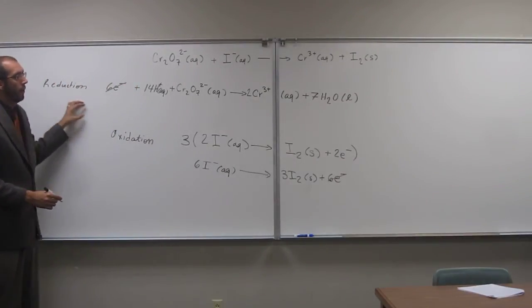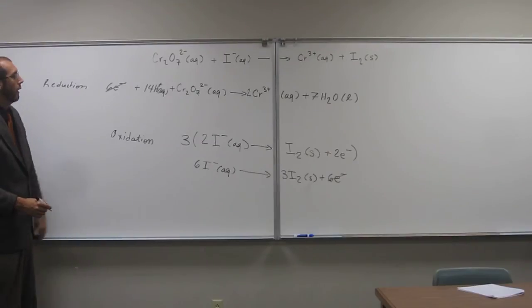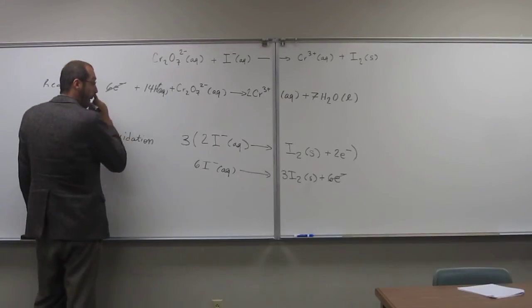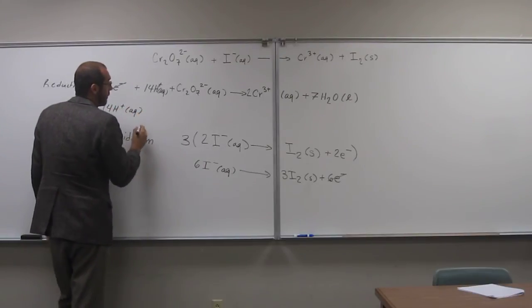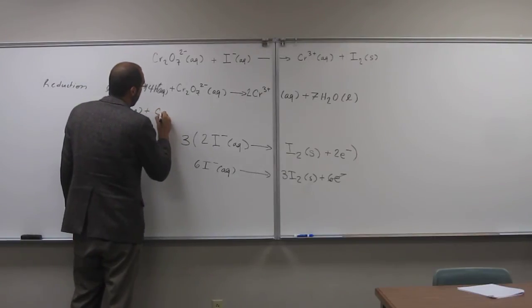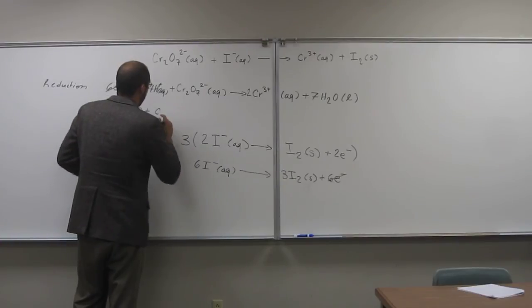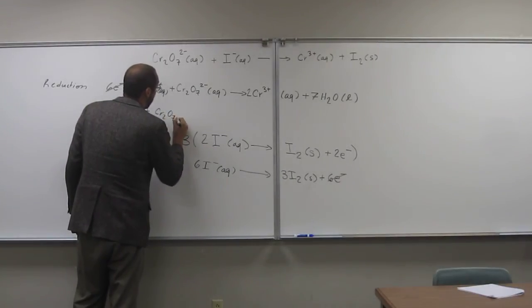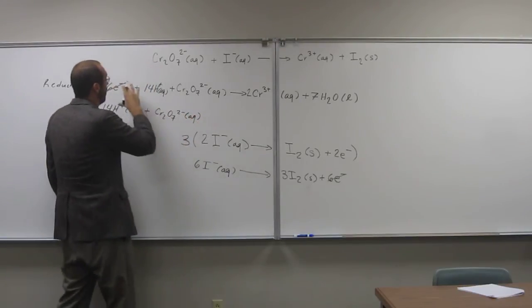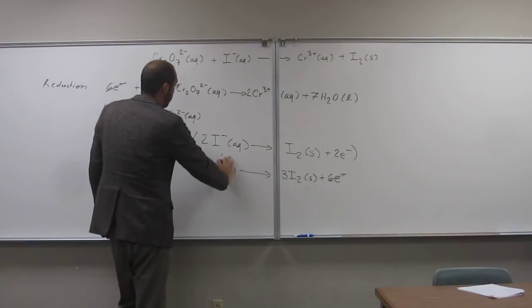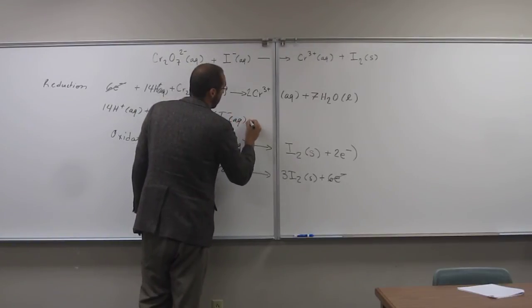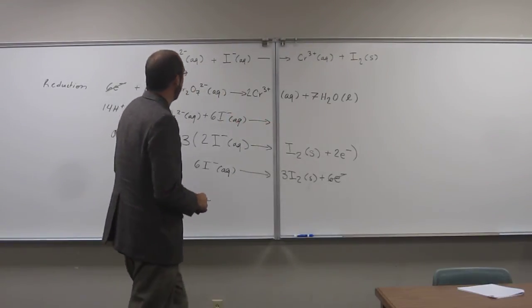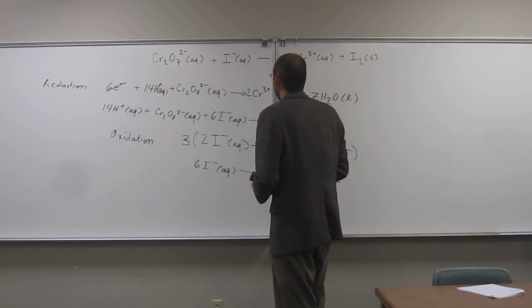So we're going to have the added overall reaction. I'm going to write it here in the middle. So that would be the overall balanced reaction equation here. So in order to do that, you do 14H plus aqueous plus Cr2O7. So that's all the reactants here that aren't crossed out, and then we put the reactants from here. Plus 6I minus. So that's all the reactants from the reduction and the oxidation half reaction.